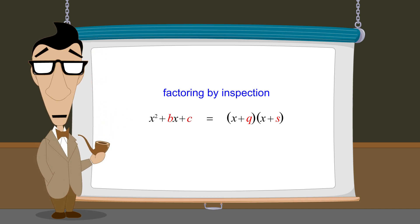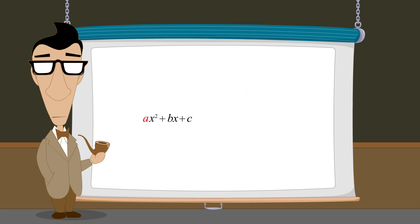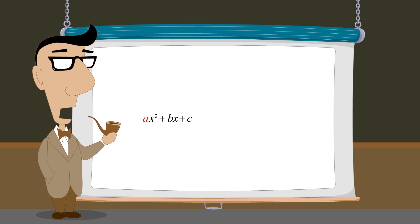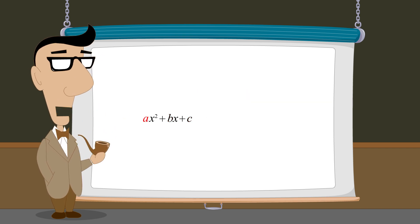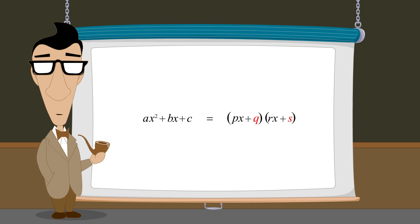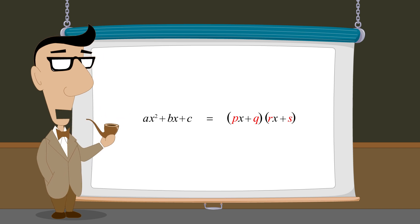However, when the coefficient of x-squared is not one, we must not only determine values for q and s, but also values for p and r, given the values of three constants a, b, and c.